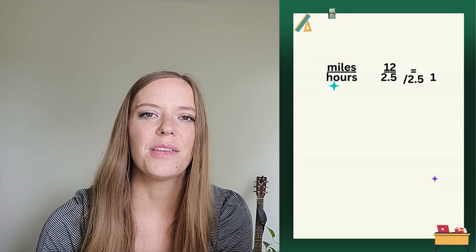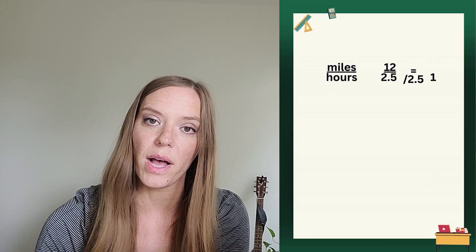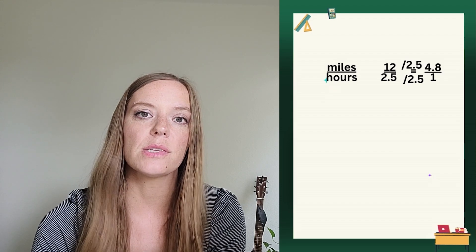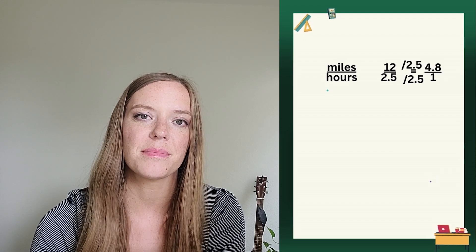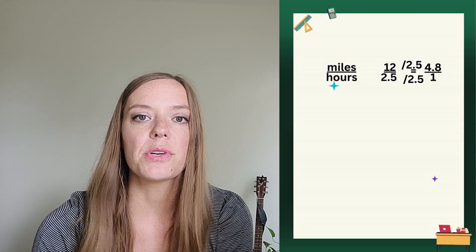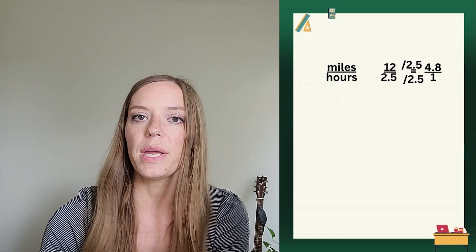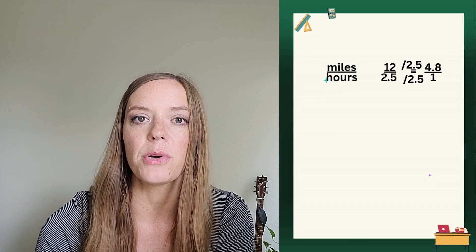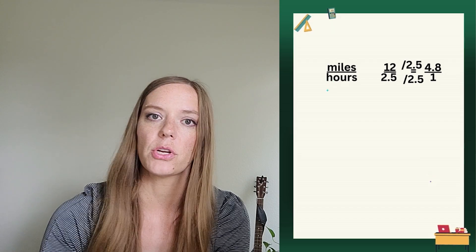All right, you got it. The 12 divided by 2.5 is 4.8. Great job. So that means that this person ran 4.8 miles per hour. So that's their unit rate.